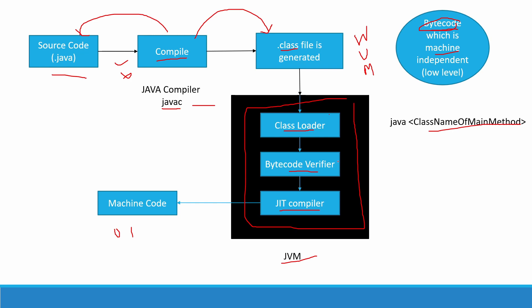After loading all the classes, the next step is the bytecode verifier. The bytecode verifier will verify the bytecode — whether it will create any damage if we run this program or not. If verified successfully, the next step is the Just-In-Time compiler. The JIT compiler takes the bytecode and generates machine code in zeros and ones so that the computer can understand. All three steps — class loader, bytecode verifier, and the Just-In-Time compiler — together form the JVM, the Java Virtual Machine.